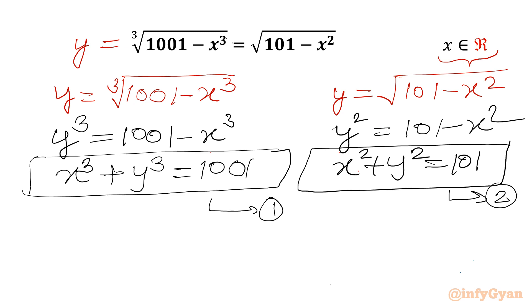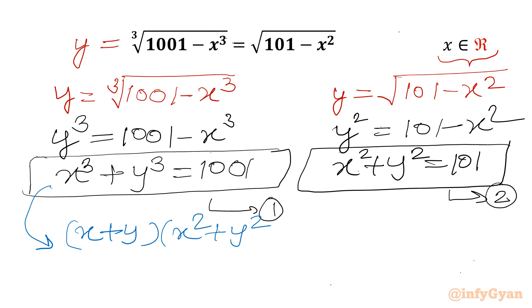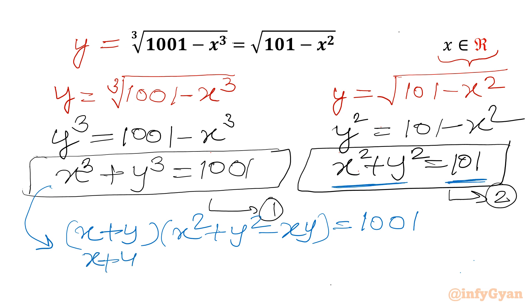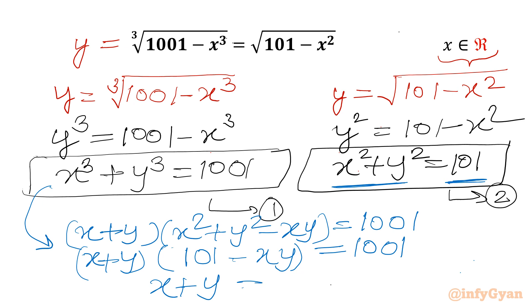Now I will apply the a cube plus b cube formula. So I can write x plus y times (x square plus y square minus xy) equals 1001. Since x square plus y square is 101, we get x plus y times (101 minus xy) equals 1001, or x plus y equals 1001 over (101 minus xy). I will call this equation 3.